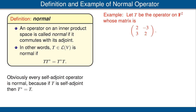Let's look at an operator that is normal but not self-adjoint. We'll work on the space F² with the standard inner product. Let T be the operator on F² whose matrix, with respect to the standard orthonormal basis, is the matrix shown here. This operator is not self-adjoint because when we take the conjugate transpose of the matrix, we do not get the same thing, since the off-diagonal entries −3 and 3 are not equal.